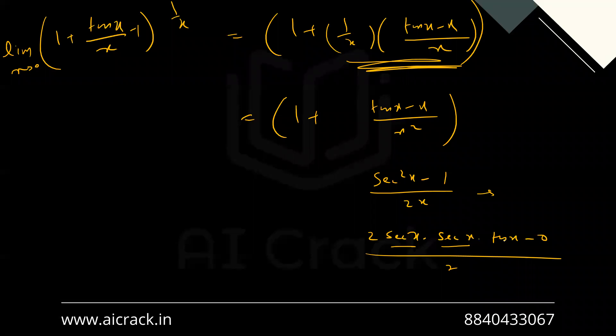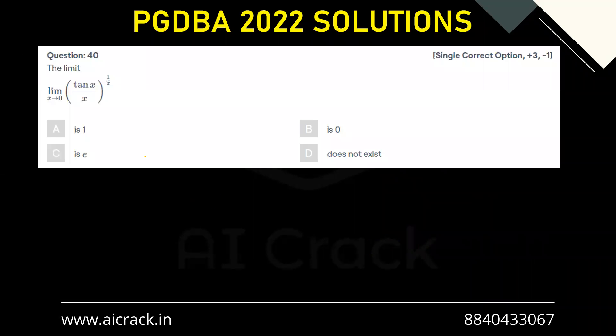Basically this is 1, this is 1, but this is 0. So this limit becomes 0. So this limit is nothing but 0. So we are getting 1 is the answer. So a is the correct answer.